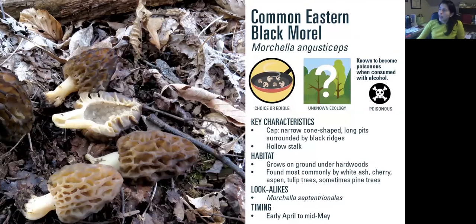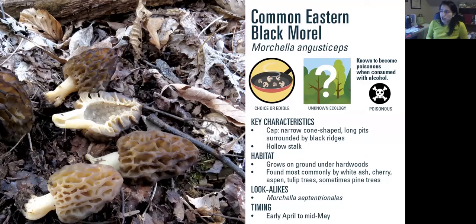The common eastern black morel is Morchella angusticeps. The cap is narrower and more cone-shaped compared to Americana; the pits tend to be a little longer, and the ridges are black — hence the name black morel. It grows under hardwoods, particularly ash, cherry, aspen, tulip trees, and sometimes pine trees. There are many reports of poisoning symptoms when cooked black morels are mixed with alcohol, so be very careful.